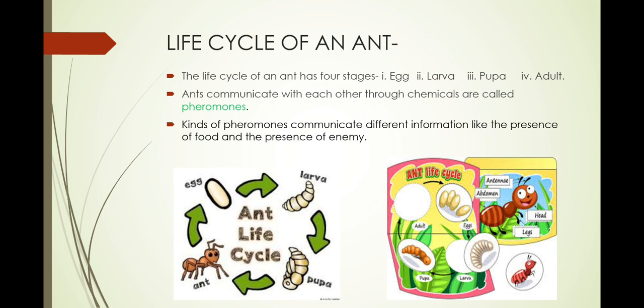Next is the life cycle of an ant. The life cycle of an ant has four stages: egg, larva, pupa and adult. Ants communicate with each other through chemicals given off by them. These chemicals are called pheromones. Different kinds of pheromones communicate different information, like the presence of food and the presence of an enemy.